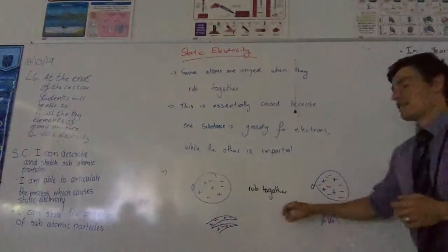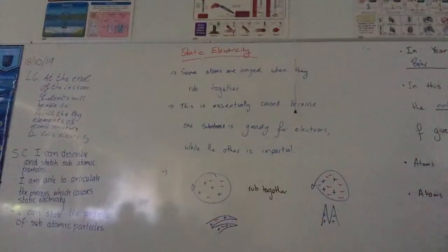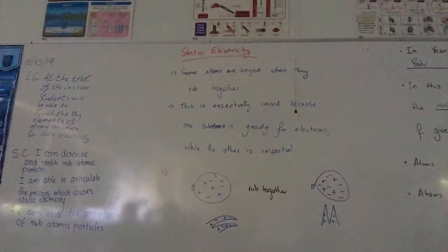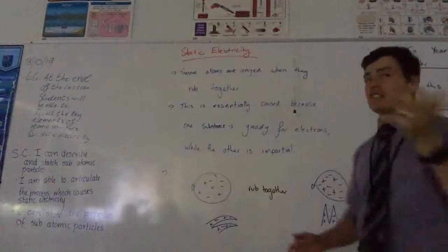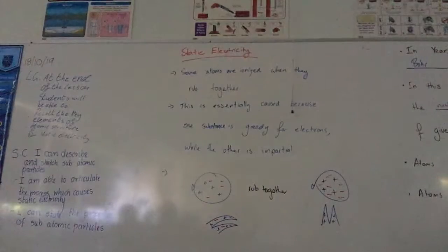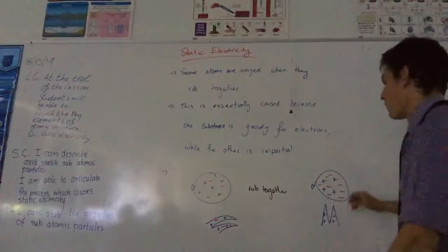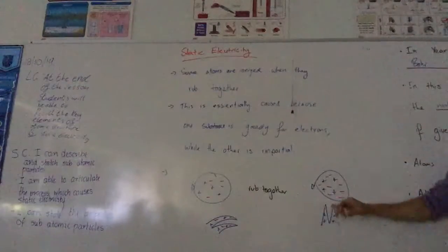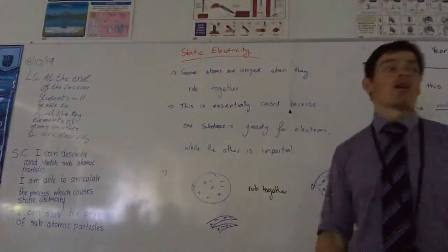But an example of how we can create charged objects is commonly used with the balloon and the hair. If you get a balloon and rub it against your hair, the hair sticks up. The reason it does that is because when you rub the balloon against your hair, electrons transfer. It doesn't matter where the electrons are going. Let's just assume the electrons are going from your hair into the balloon.